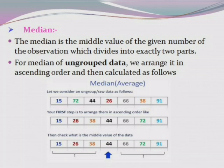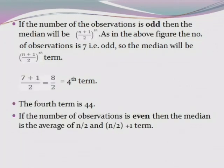We note here: if the number of observations is odd, then the median will be the (n+1)/2 th term. In the above example the number of observations is 7 (odd), so the median is the (7+1)/2 = 8/2 = 4th term. After arranging in ascending order, the 4th term is 44.